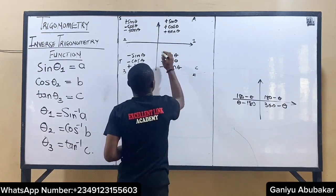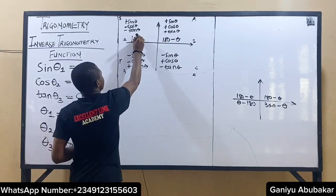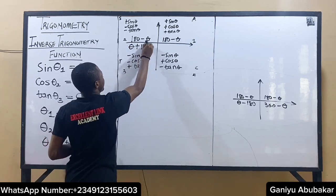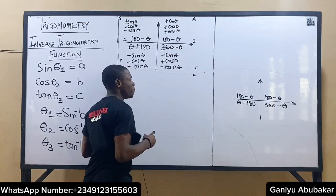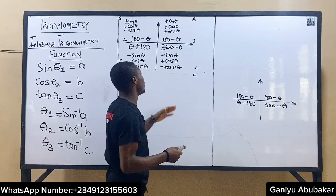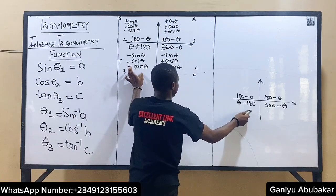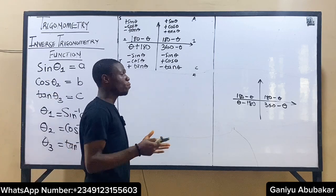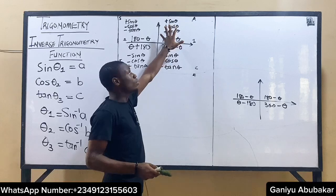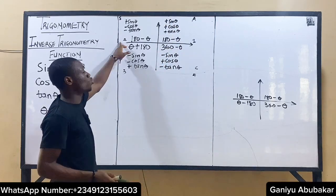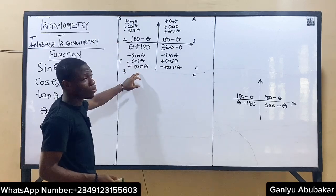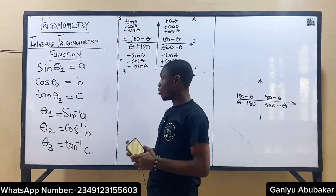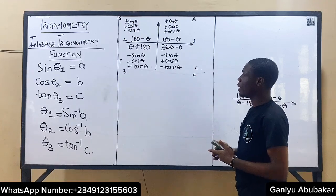The quadrant angle formulas remain the same: Q2 is 180 − θ, Q3 is 180 + θ (note the difference from standard), and Q4 is 360 − θ. Also recall: angles between 0° and 90° fall in Q1, 91° to 180° in Q2, 181° to 270° in Q3, and 271° to 360° in Q4. Now let's use these inverse function ideas to solve some problems.